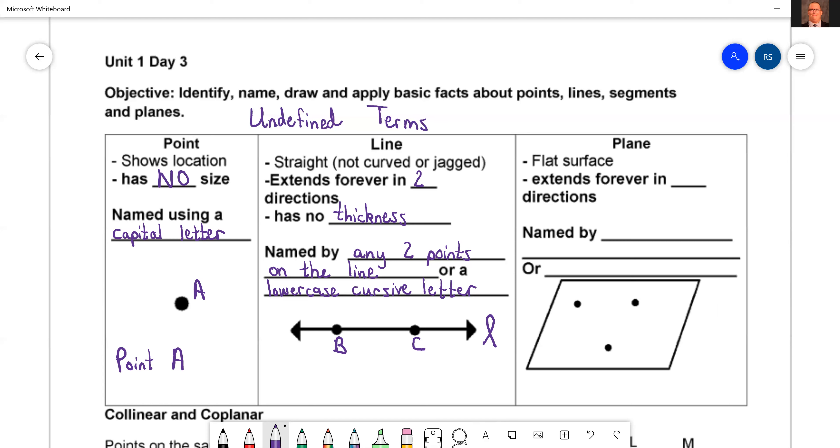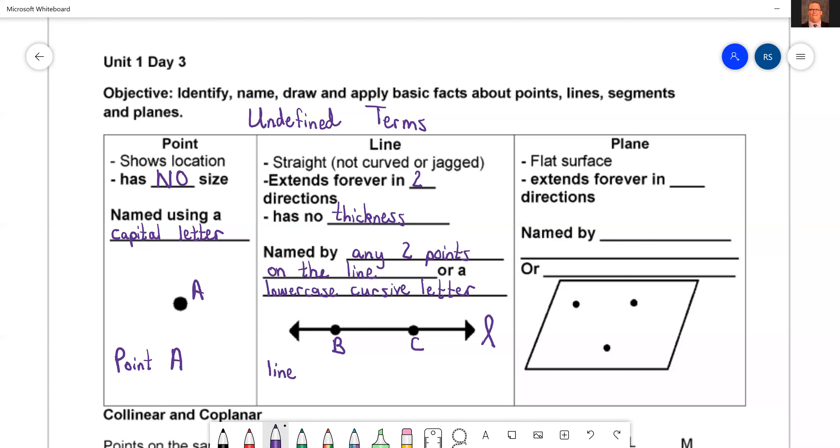Now there's multiple ways you can write the name of this line. You can say line BC, or you can say line CB. Both are okay. But let's say that's too much writing. You don't want to have to write the word line. Well then you can say BC and then draw a line, but you have to put the arrows on top. If you don't put the arrows, you're telling me it's a segment. We haven't talked about segments yet, but we will by the end of the day.